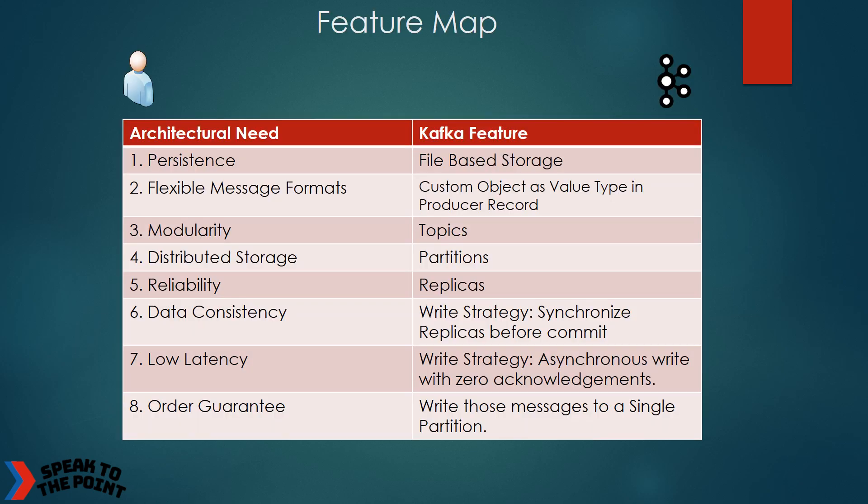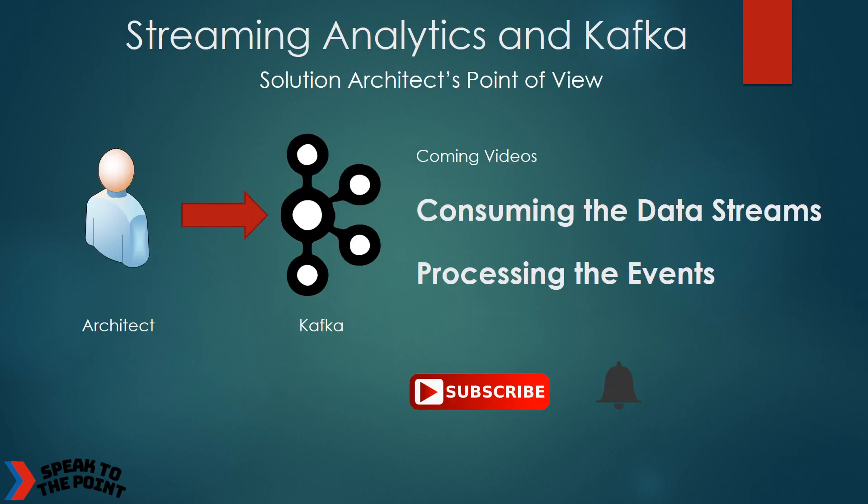In this conversation, the architect wanted to build an intermediate storage layer for the source messages which is persistent, modular, supporting multiple message formats, reliable, physically distributed, supporting write strategies for consistency and performance, and guaranteeing the order of messages. He has spoken to the Kafka team and found out which features of Kafka can address these architectural needs. In the next videos, the conversation continues to discuss the architectural needs related to consuming the data streams and processing the events, and how Kafka supports those needs.